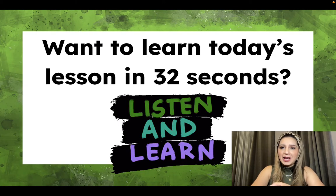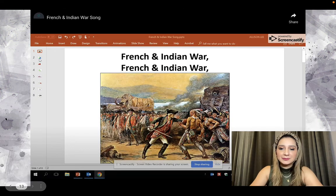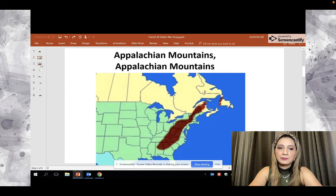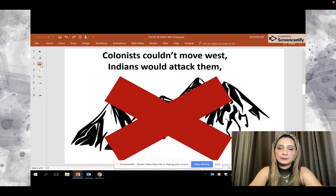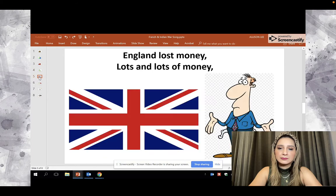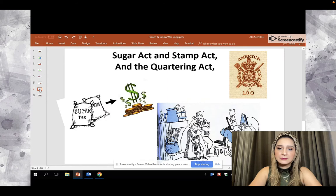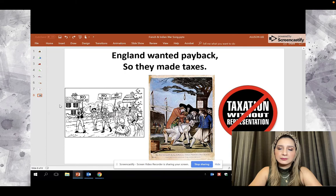I want to show you how easy it is to learn what the French and Indian War was and what the effects are. French and Indian War — Appalachian Mountains — colonists couldn't move west, Indians would attack them — Proclamation Act. England lost money, lots and lots of money, so they were in debt. Sugar Act, Stamp Act, and Quartering Act — England wanted payback, so they made taxes.